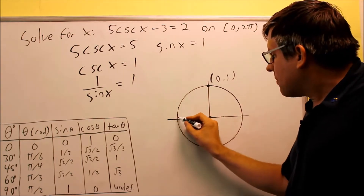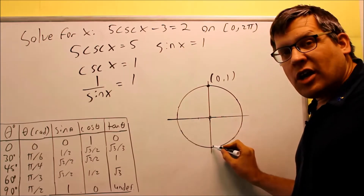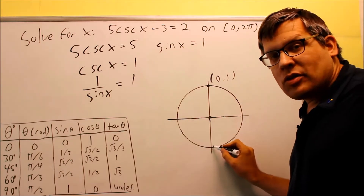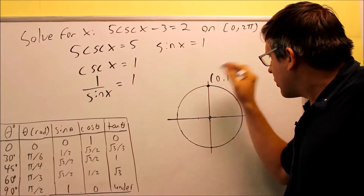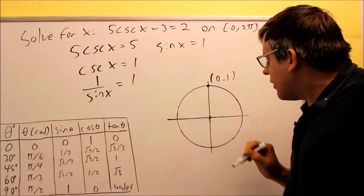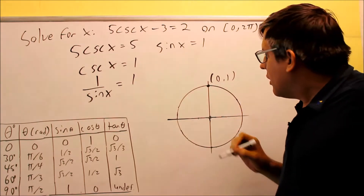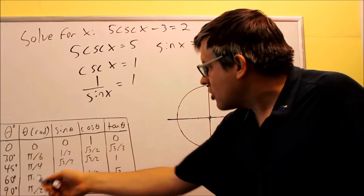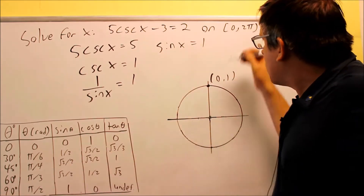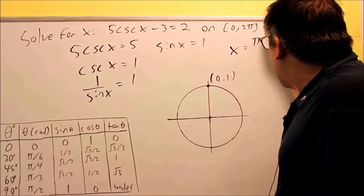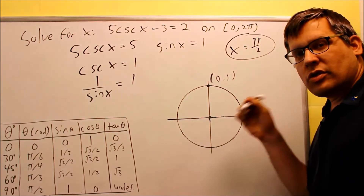If we look at that, the other points are going to have zeros or a y value of negative 1. So this is a case where there's actually only one angle on the unit circle where that's going to be equal to 1. That's going to be at 90 degrees, or since we have to give our answer in terms of radians, that's going to be pi over 2. So my answer for the whole problem is x equals pi over 2 — the only single answer.